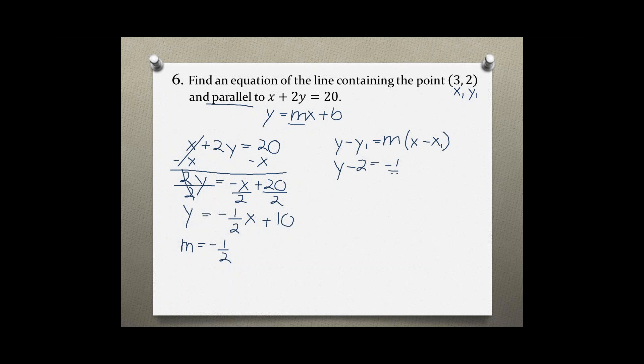The slope which is -1/2 times (x - 3). Again, solving for y to write this equation in slope-intercept form: distribute to get -1/2x + 3/2, then add 2 to both sides.